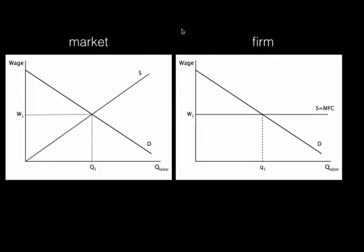Just like when we were looking at firms before, we had a market and a firm — except this is the factor market, not the output market. We have a market determining the market wage, and we put side by side this firm. This firm is going to be perfectly competitive in this labor market, which means they're a wage taker — a small enough part of this labor market, one out of many firms hiring labor. So they face a perfectly elastic supply of labor, because they could hire all the labor they want at this market wage.